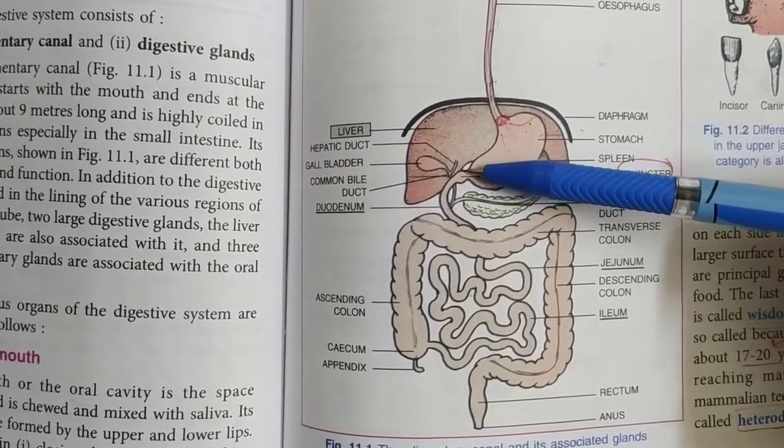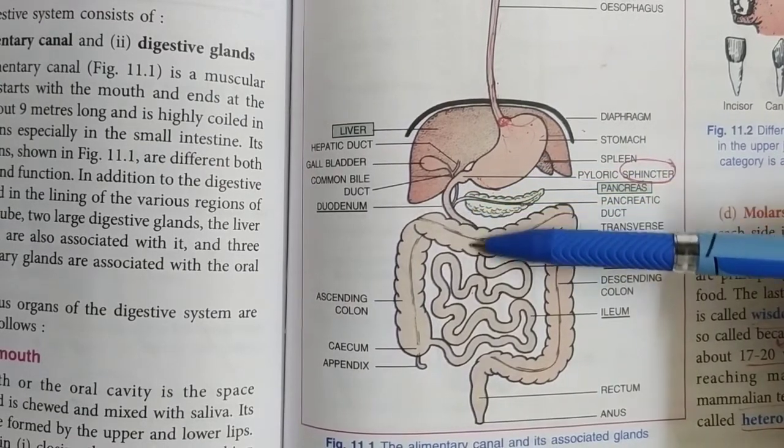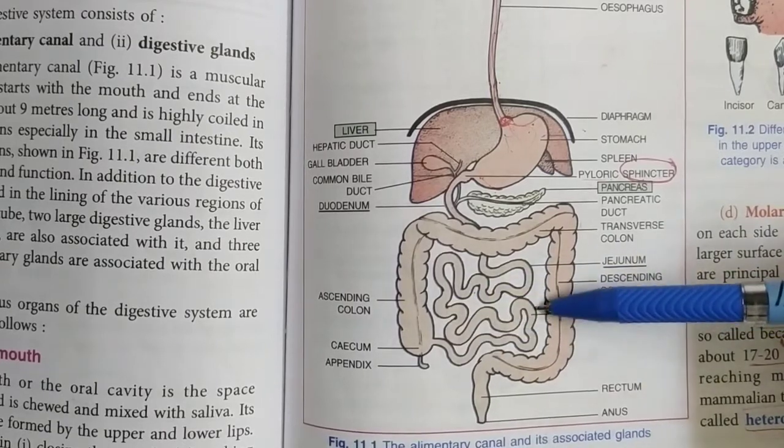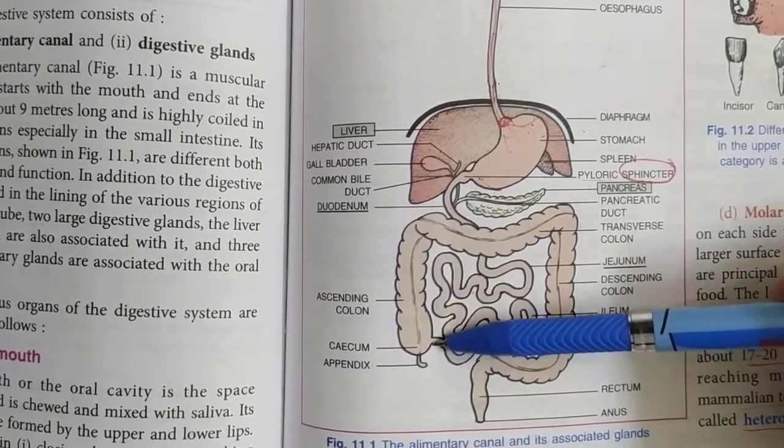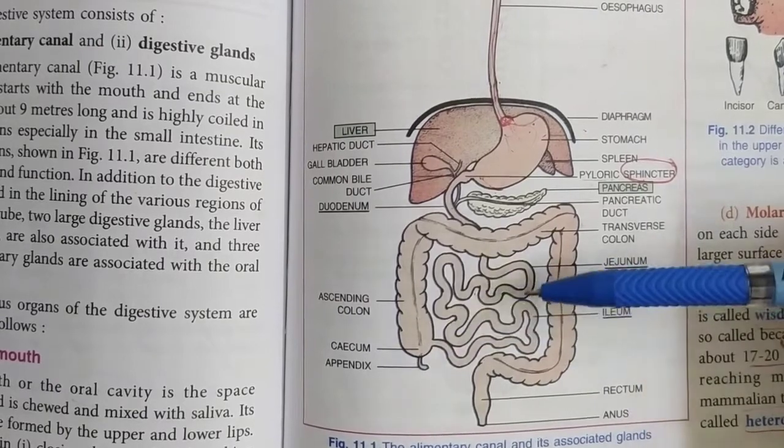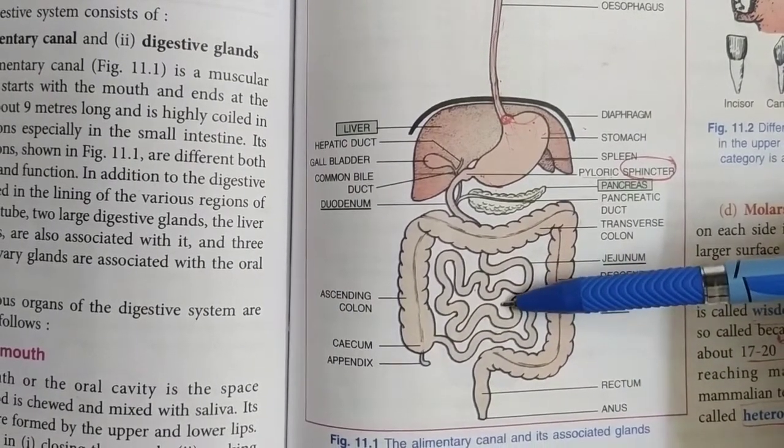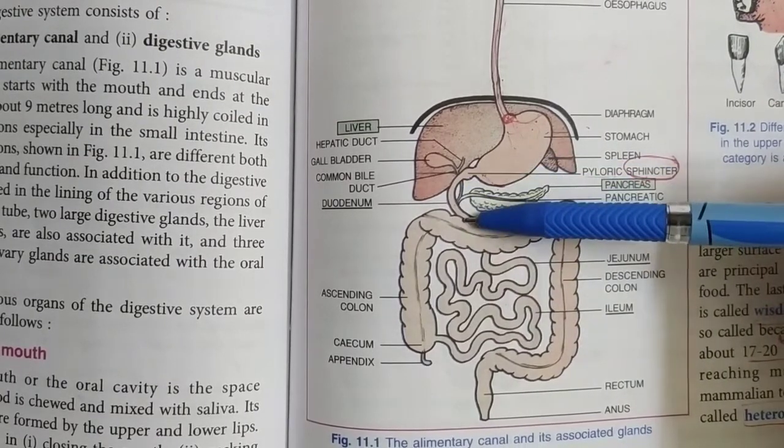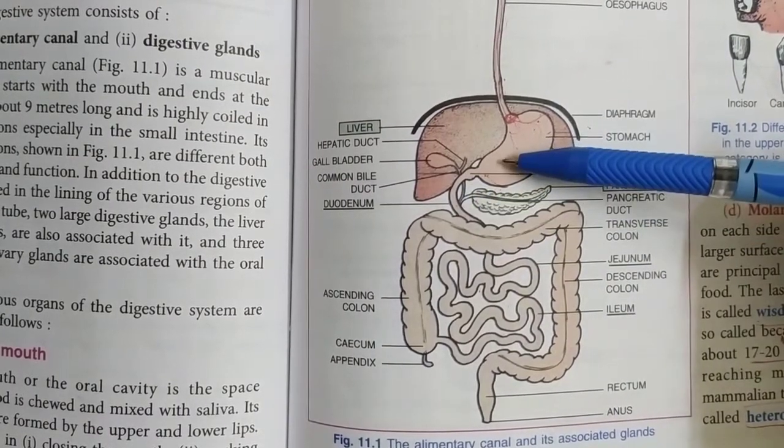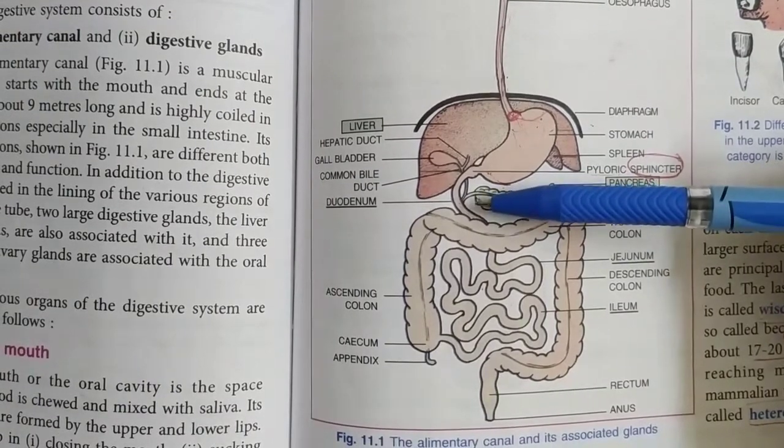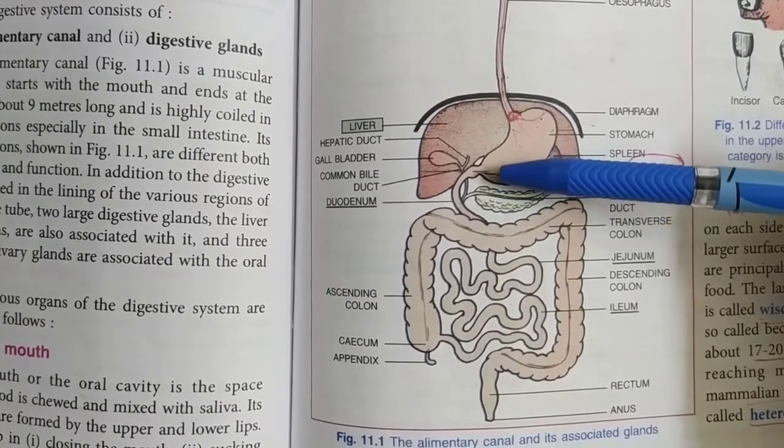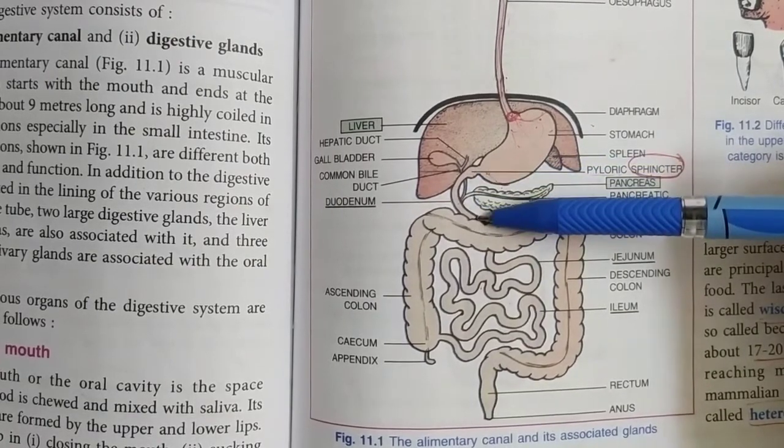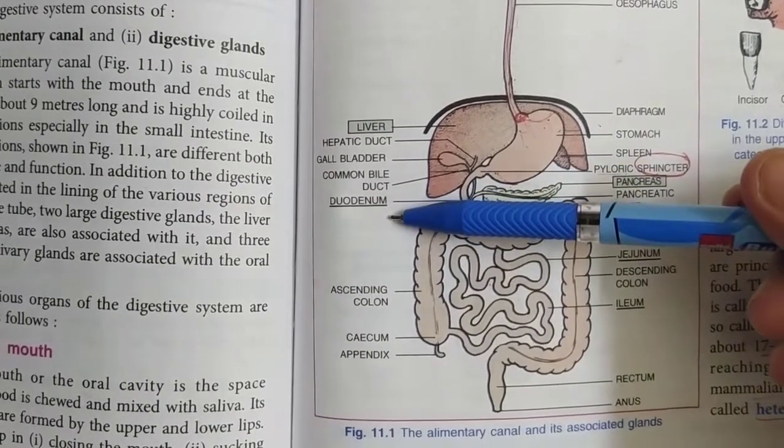So the small intestine starts from the stomach from here. This highly coiled tube is about 7 meters long in total and is known as the small intestine. Now this small intestine is further subdivided into 3 parts. This is the first part which receives the semi-digested food from the stomach, and last time I told you that is called chyme. Now this will receive the chyme and this first part of the small intestine is known as duodenum.